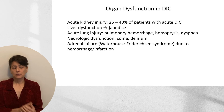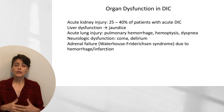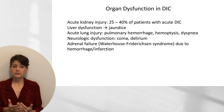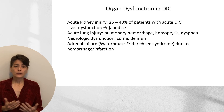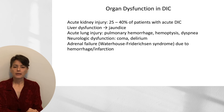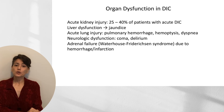Why are we so concerned about DIC? You can get widespread organ dysfunction and multi-organ failure. About 25 to 40% of patients with acute DIC will present with acute kidney injury. Liver dysfunction may manifest as jaundice, and you can see pulmonary hemorrhage, hemoptysis, and dyspnea with acute lung injury — requiring respiratory support. Neurologic dysfunction can result in coma or delirium. Particularly in meningococcemia, adrenal failure or Waterhouse-Friderichsen syndrome can occur secondary to hemorrhage and infarction of the adrenal glands.